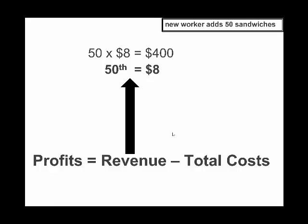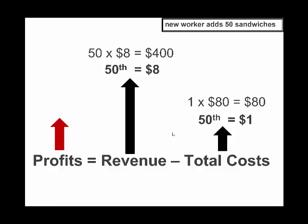So revenue will change by a lot. What about your cost? Let's say you pay that worker $80 at a fixed rate. So the cost of the worker is $80, and on a per-sandwich basis the cost of the 50th sandwich is $1. This is a pretty good deal — you hire that worker, you make a lot more additional revenue than additional cost, so your profits will increase.